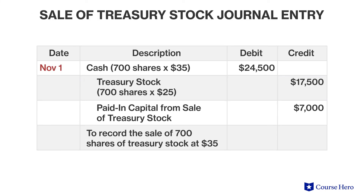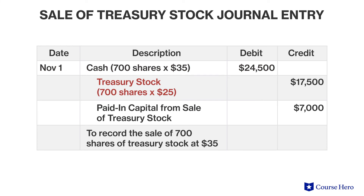Suppose that on November 1st, the corporation sells 700 shares of the treasury stock for $35. A journal entry is made to record the sale. Cash would go up with a debit of $24,500. Treasury stock is then reversed to the extent of 700 shares at the price paid for those shares, $25.